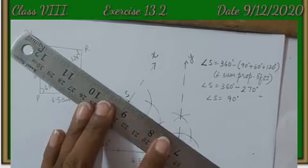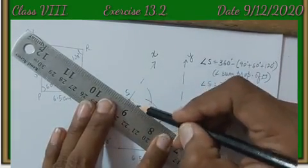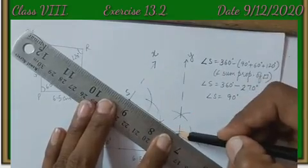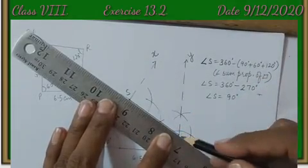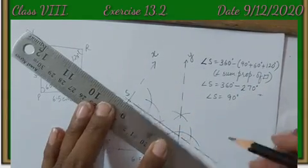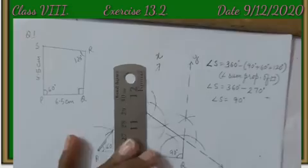The intersecting point of rays SZ and QY is point R.